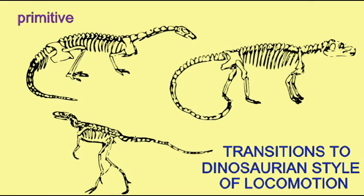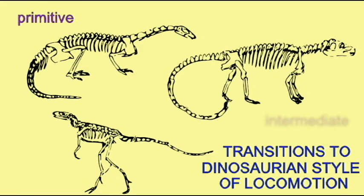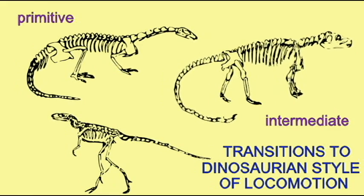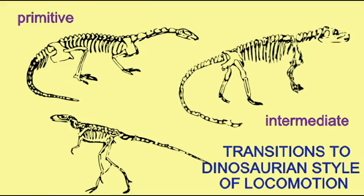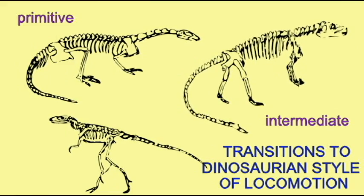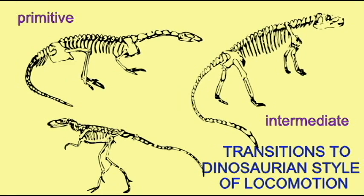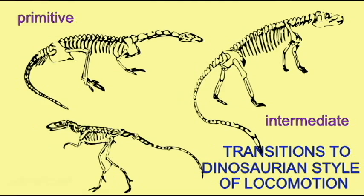In some groups of archosaurs, the legs had become increasingly longer and the arms shorter as seen in the first dinosaurs. The hip joints were modified in many archosaur groups, and in some, the dinosaurian condition of having elongated processes on the pubic and ischial bones is observed.